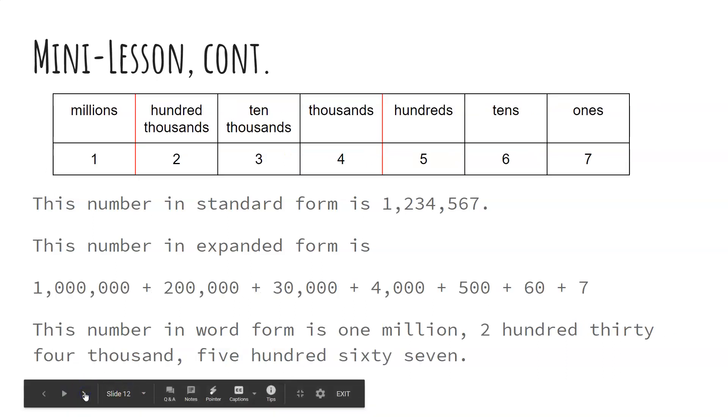Okay, we're going to look at one more. This one, boys and girls, is going all the way into the millions. So we have in standard form 1, 2, 3, 4, comma, 5, 6, 7.